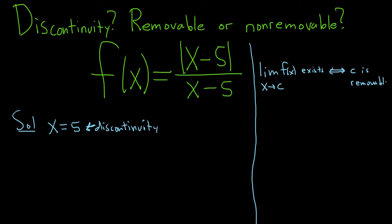So this goes the other way as well. If this limit does not exist, this is equivalent to saying that c is not removable.